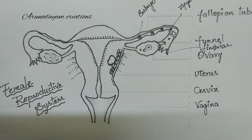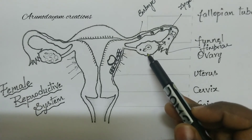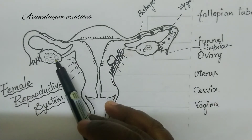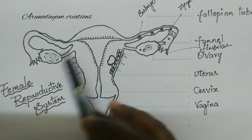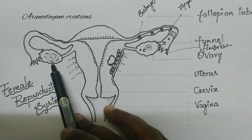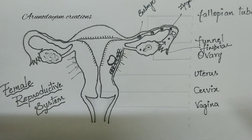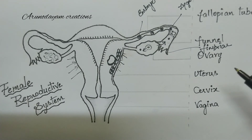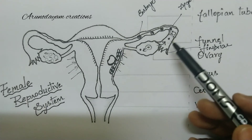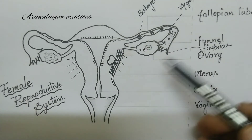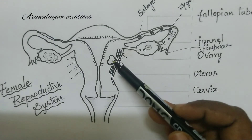For every menstrual cycle, we will have only one ovum released — either from one ovary or the other. Only one ovum is produced per cycle. After fertilization, baby development takes place.